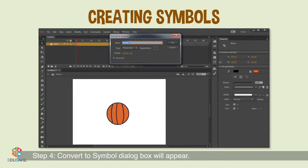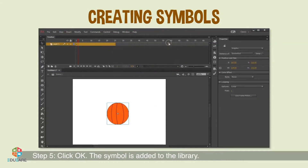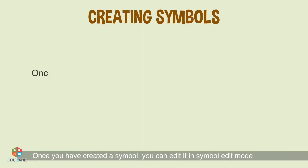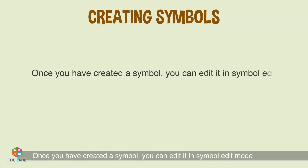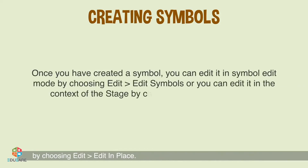The Convert to Symbol dialog box will appear. Type the name of the symbol in the name box and select the behavior from the type drop-down list. Step 5: Click OK — the symbol is added to the library. Once you have created a symbol, you can edit it in symbol edit mode by choosing Edit, Edit Symbols, or you can edit it in the context of the stage by choosing Edit, Edit in Place.